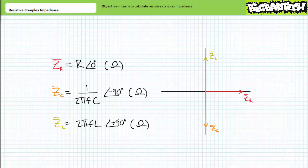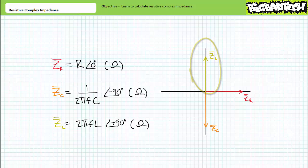Finally, inductors, when represented as complex impedances, are elements that exist entirely in the positive vertical imaginary y-axis. Frequency of the AC source does have an effect on the magnitude of inductive impedance. Z of L (note the overbar) equals 2π times the frequency in hertz, times the inductance in henrys, at an angle of positive 90 degrees when represented using polar format. When depicted in the impedance domain, inductors exist solely in the positive imaginary vertical y-axis, proportional to 2πfL. We'll examine inductive complex impedance in an upcoming lecture.